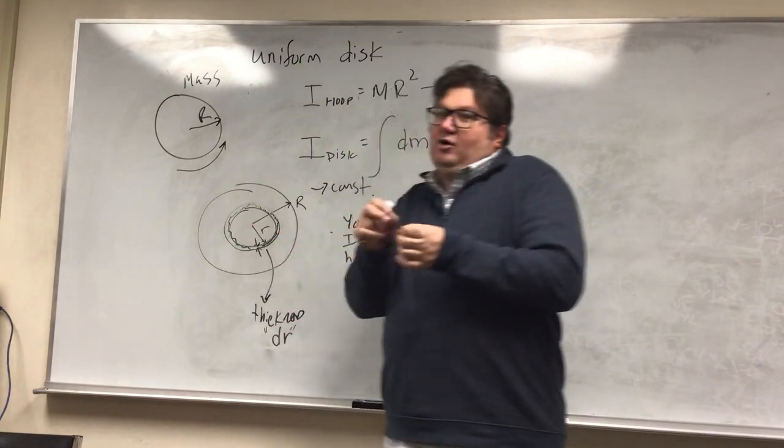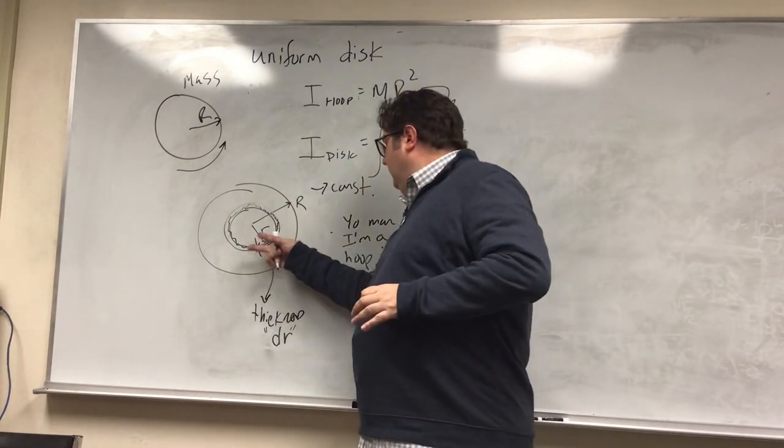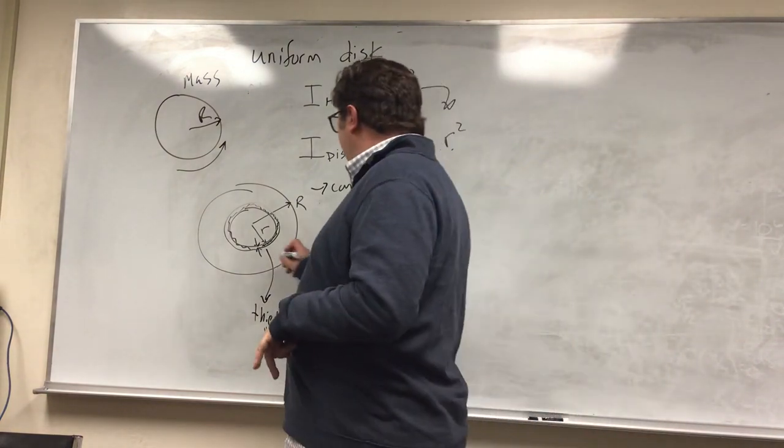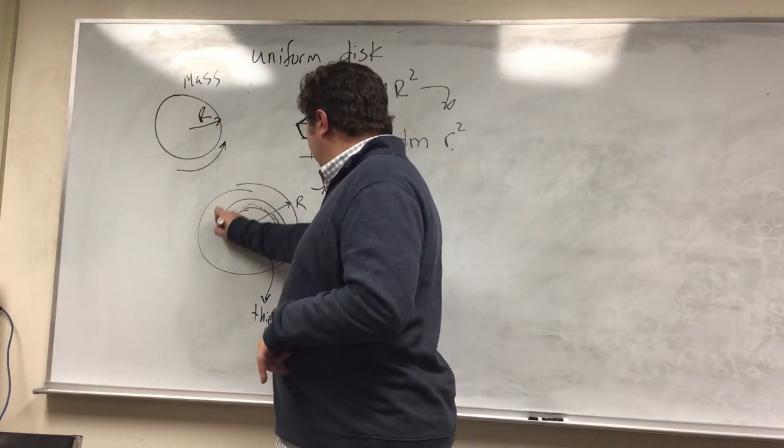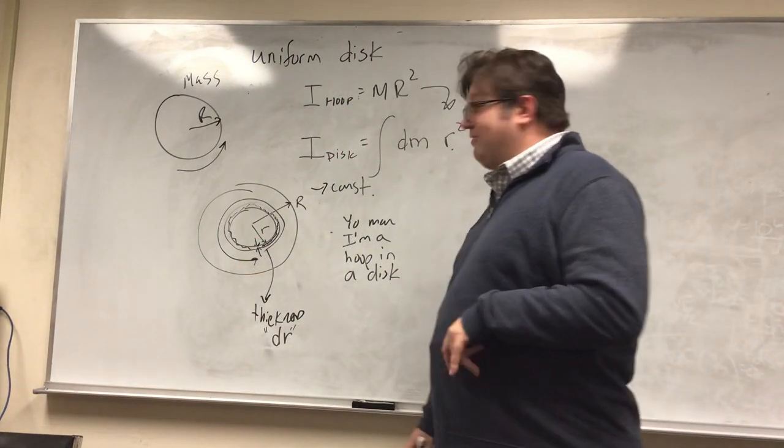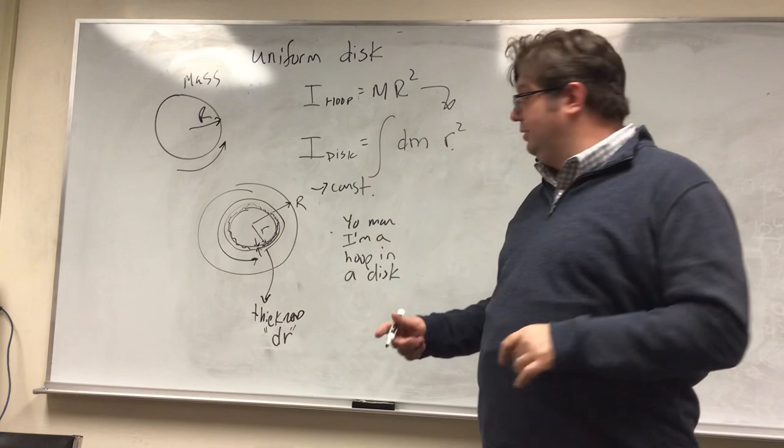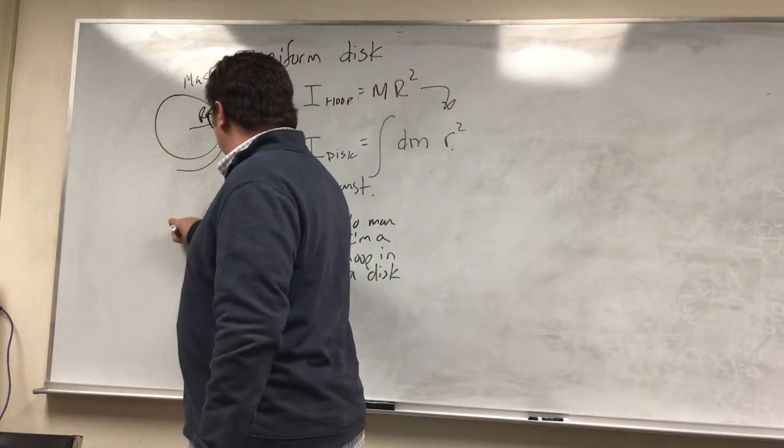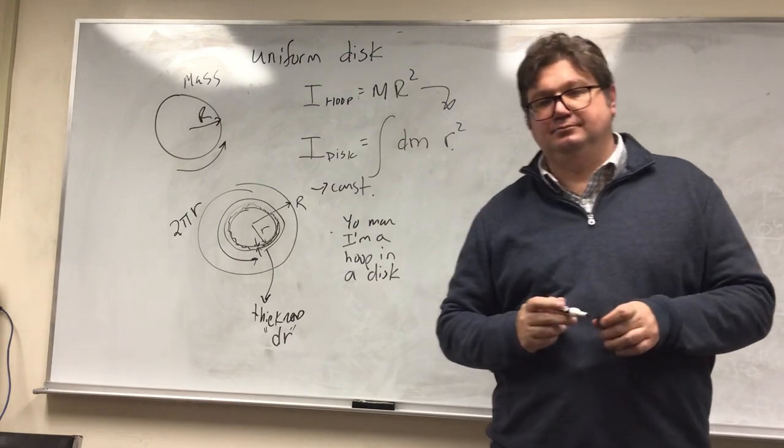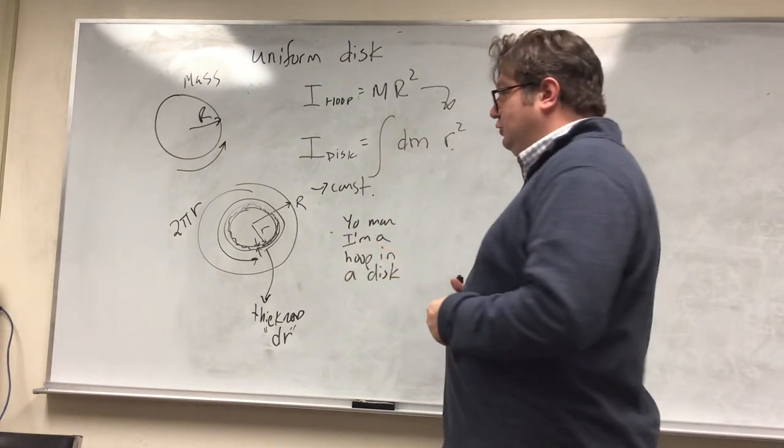So as I go out and out and out with my hoops, my thickness always stays the same. But what does change is my circumference. That changes. My circumference of my hoop is going to be 2 pi r. It's just the circumference of a hoop. You guys remember that from your SATs.